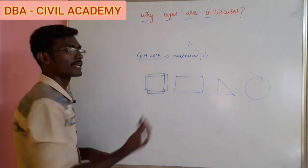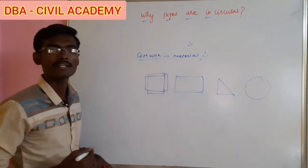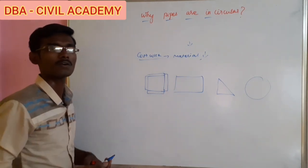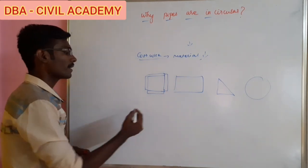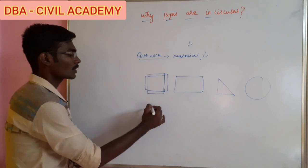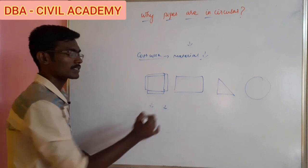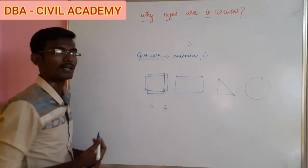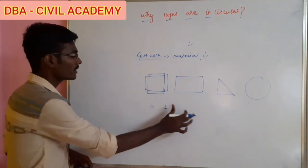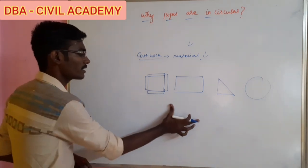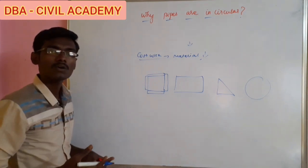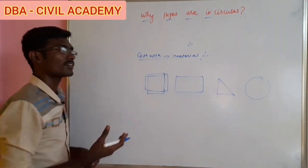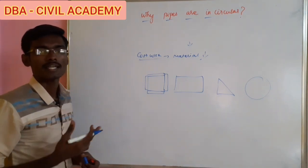If you increase the perimeter, the material cost will increase. So if we have a larger perimeter, the cost is a major factor. The shape is cost-wise — the perimeter determines the cost.